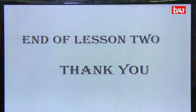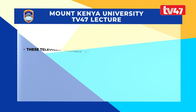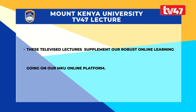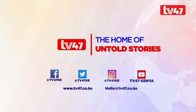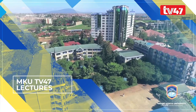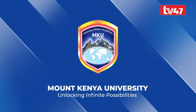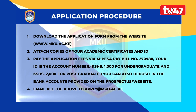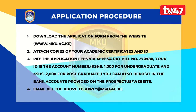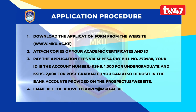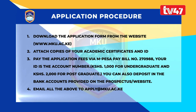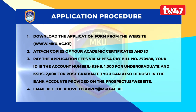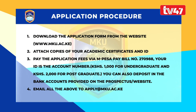That is the end of lesson two. Televised lectures supplement our robust online learning on the MKU online platform. You can view more televised lectures via the online platform. To apply, download the application form from www.mku.ac.ke, attach academic certificates and ID, and pay the application fee via M-PESA Paybill number 270988. The charge for postgraduate is 2,000 shillings. Email all documents to apply@mku.ac.ke.